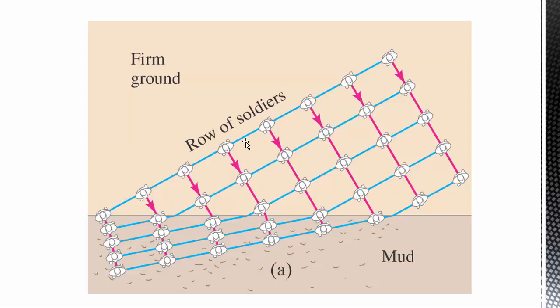So here's one example. If you've got a bunch of soldiers marching, and they're on solid ground here, and over here they're going to hit some mud, those that hit the mud are going to slow down. And so these guys have already slowed down, and these guys haven't slowed down yet. And that causes the direction change.